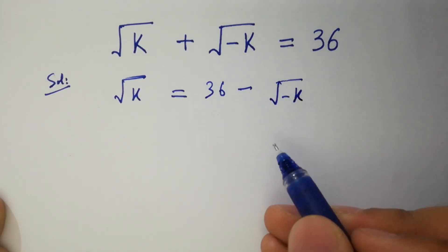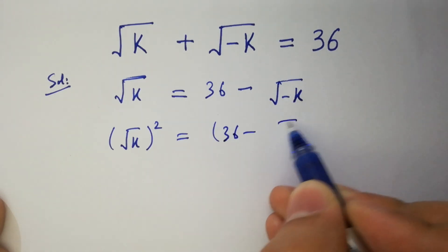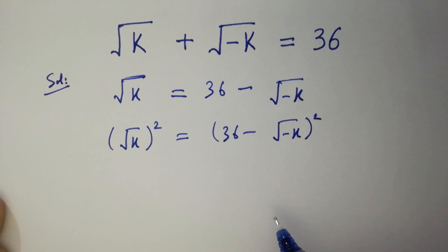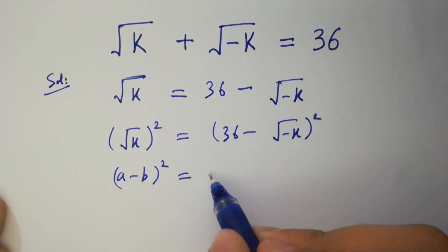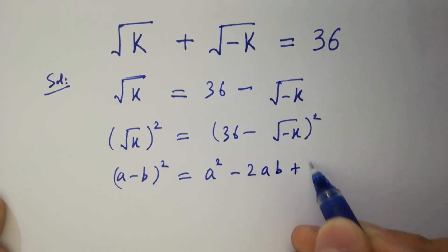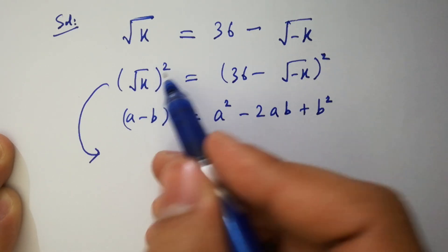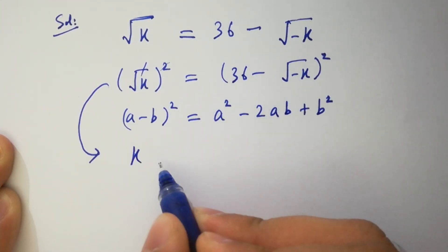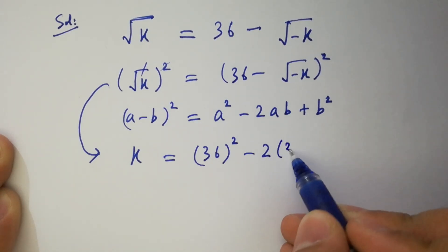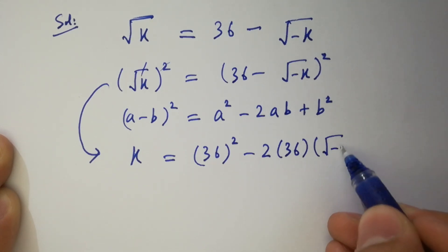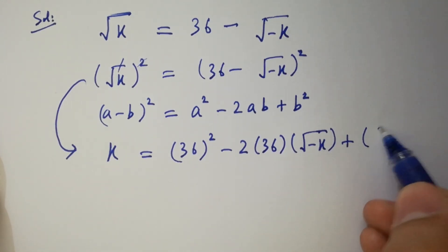Take square on both sides. As we know, a minus b whole square equals a square minus 2ab plus b square. So we have k equal to 36 square minus 2 times 36 times square root of minus k, plus square root of minus k square.